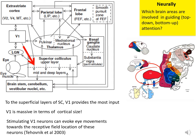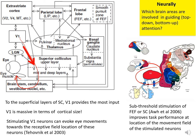If a V1 neuron is stimulated, an eye movement can be evoked to the receptive field location of that neuron, presumably via this route of action. Meanwhile, the frontal eye field and superior colliculus themselves also affect attention. For example, if their neurons are stimulated, visual task performance improves at the corresponding visual field locations — the movement fields of those stimulated neurons — even when the stimulation is not strong enough to evoke eye movements. This is as if attention is shifted covertly to the corresponding visual location.